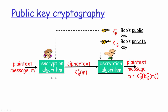Looking at the diagram: the encryption algorithm takes the plaintext message and uses the public key of the receiver — Bob is the receiver here. Using Bob's public key, the plaintext message goes through the encryption algorithm to generate the ciphertext, which is then sent on the wire. On the receiver side, when Bob receives the ciphertext message, he applies his private key through the decryption algorithm and generates the original plaintext message back.